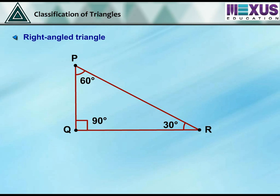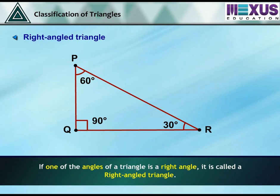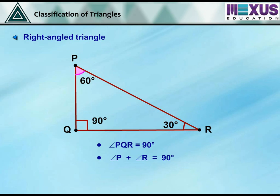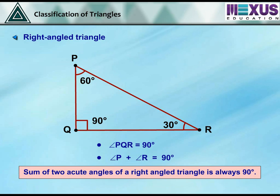Right angle triangle. If one of the angles of a triangle is a right angle, it is called a right angle triangle. The given figure shows right angle triangle PQR as angle PQR is equal to 90 degrees. Also, the sum of the two acute angles of a right angled triangle is always 90 degrees.